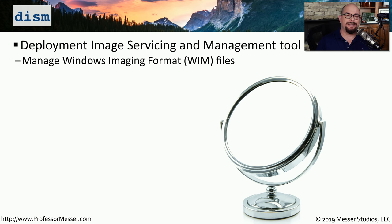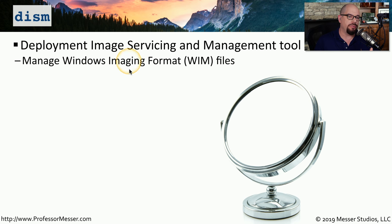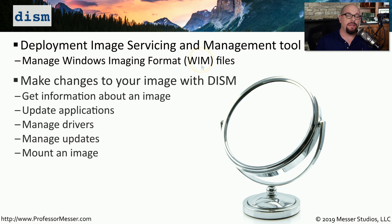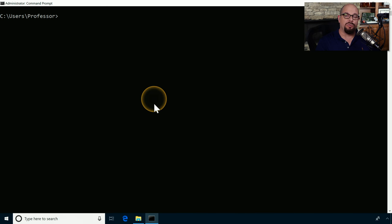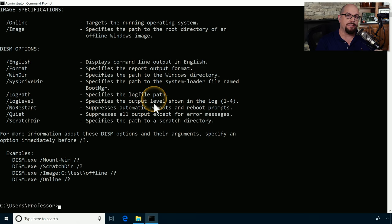Another command line tool is DISM — the Deployment Image Servicing and Management Tool. There's a standard Windows Imaging Format called WIM (Windows Imaging Format), and the DISM command allows you to make changes, view files, and perform other functions associated with WIM images. If you need to install new applications, drivers, or updates to an image, you would use DISM. Typing 'DISM' with no parameters produces pages of information covering all available options.